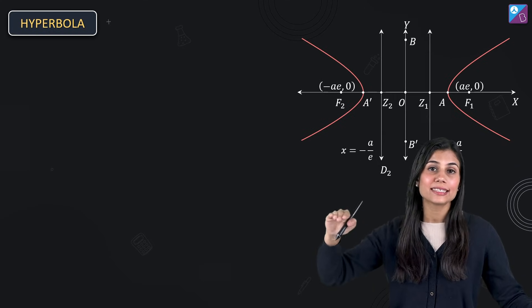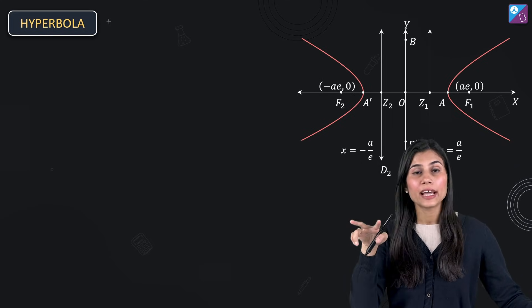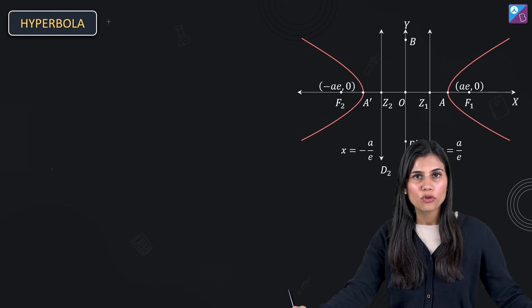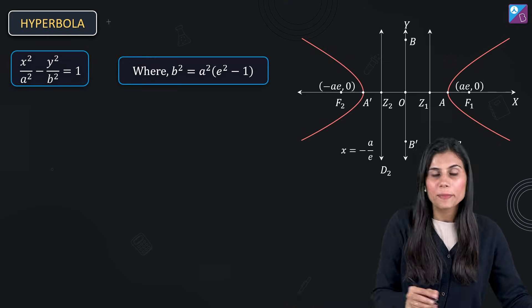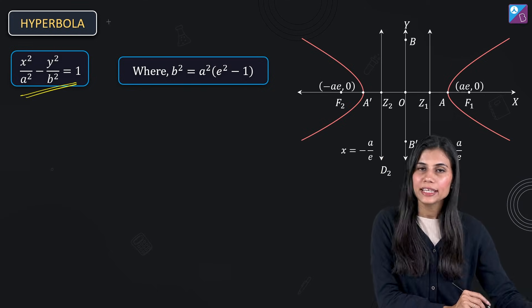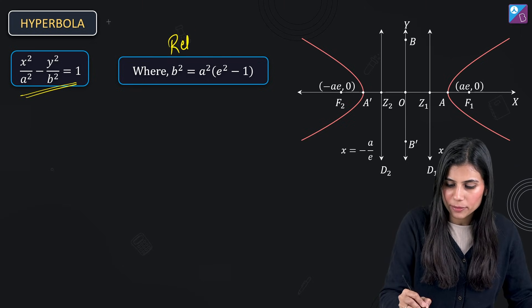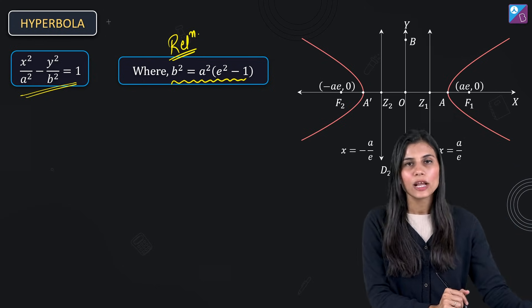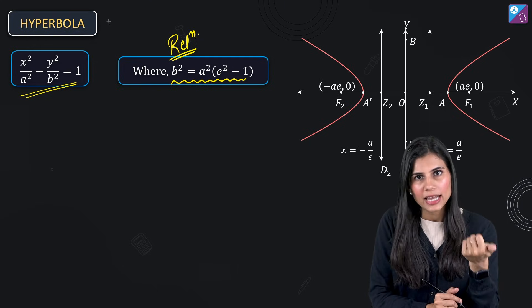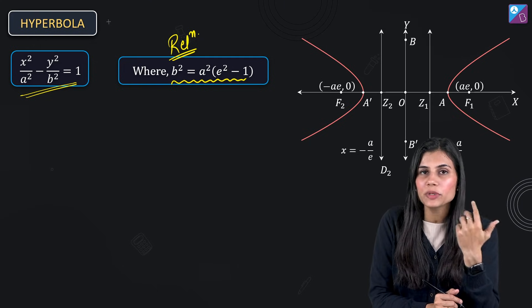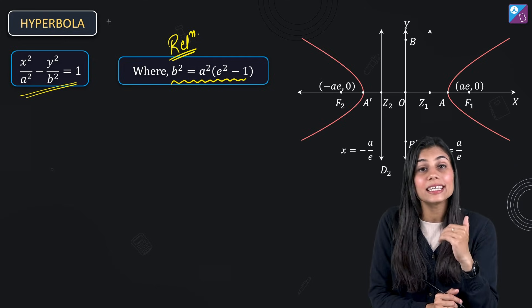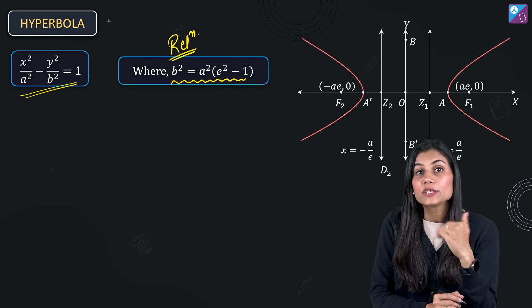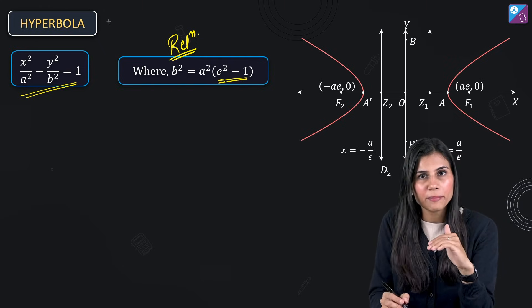Next, let's move on to hyperbola. The standard equation of a hyperbola with the x-axis as its transverse axis — both foci on the x-axis and y-axis as the conjugate axis — is x²/a² - y²/b² = 1. The relationship between a, b, and e, which is extremely important, is b² = a²(e² - 1). This is because in the case of ellipse, eccentricity is a fractional quantity between 0 and 1, but for hyperbola e > 1, so e² > 1, giving us e² - 1.